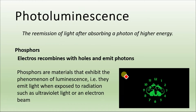Photoluminescence is the re-emission of light after absorbing a photon of higher energy. When materials absorb photons, the electrons jump from the valence band to the conduction band. This process is also known as the excitation of electrons.